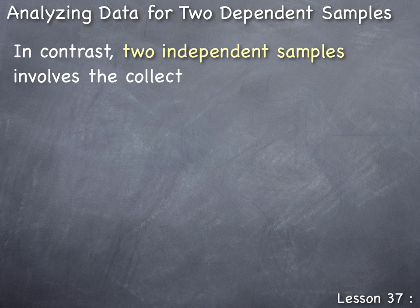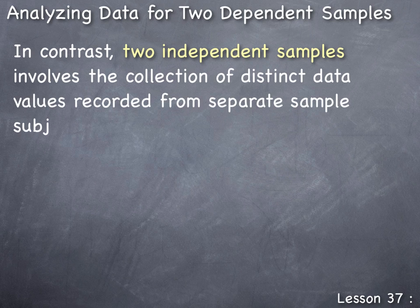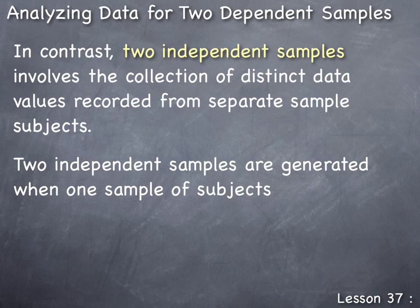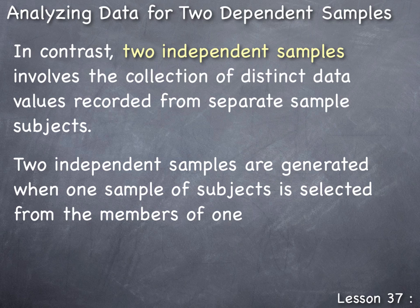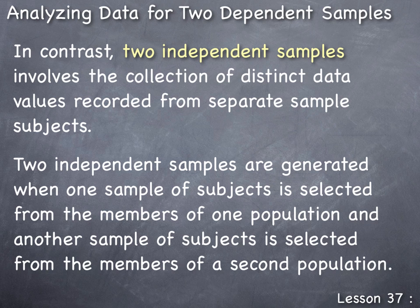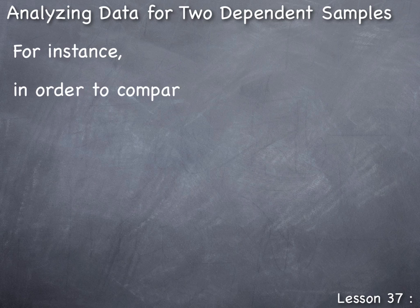In contrast, two independent samples involves the collection of distinct data values recorded from separate sample subjects. Two independent samples are generated when one sample of subjects is selected from the members of one population and another sample of subjects is selected from the members of a second population.